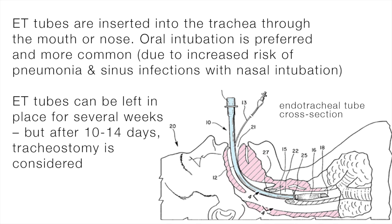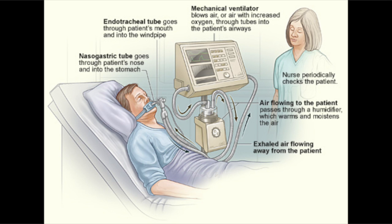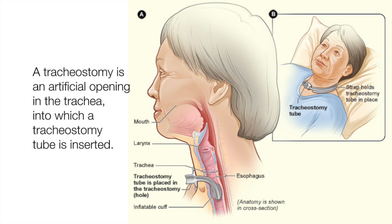ET tubes are inserted into the trachea through the mouth or nose. Oral intubation is preferred and more common due to an increased risk of pneumonia and sinus infections with nasal intubation. ET tubes can be left in place for several weeks, but after 10 to 14 days, tracheostomy is considered. A tracheostomy is an artificial opening in the trachea into which a tracheostomy tube is inserted.